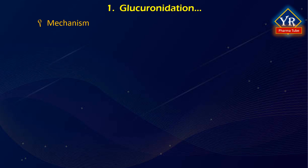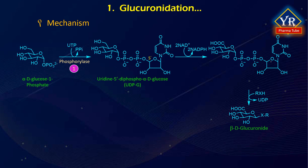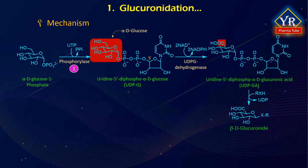Mechanism of glucuronidation: formation of beta-glucuronides involves several steps. In the first step, alpha-D-glucose-1-phosphate undergoes phosphorylation by a phosphorylation enzyme to an activated coenzyme form, that is uridine 5-diphospho-alpha-D-glucose, abbreviated UDPG. The UDPG is then oxidized by UDP glucose dehydrogenase enzyme to the actual coenzyme UDPGA, that is uridine 5-diphospho-alpha-D-glucuronic acid, in step 2.